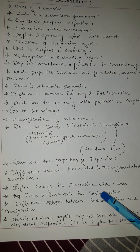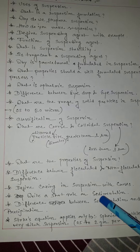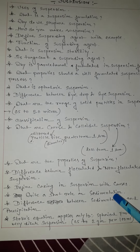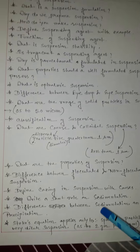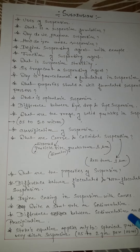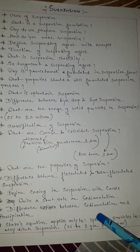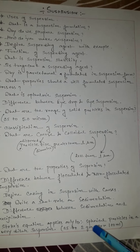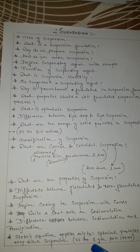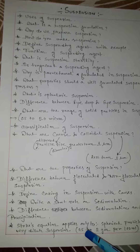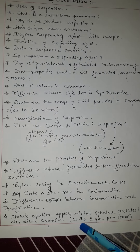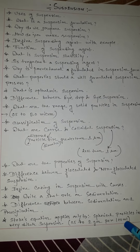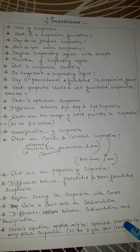Define caking in suspension with causes, and write a short note on sedimentation. What do you mean by sedimentation? Difference between sedimentation and precipitation — this is also very important. Stokes equation applies only to spherical particles in a very diluted suspension, like 0.5 to 2 grams per 100 mL — this is also discussed here.